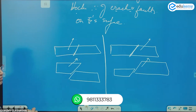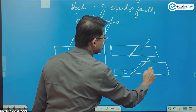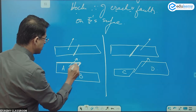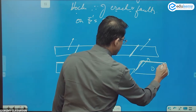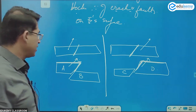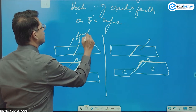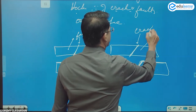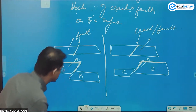This is block A, this is block B, and this is block C. This elevation is called the block mountain. The reasons could be anything — okay, the faults. This is the fault, this is the crack.